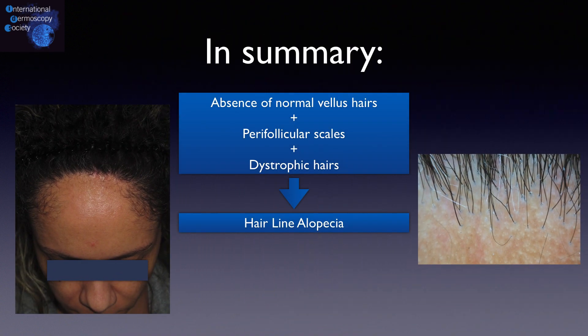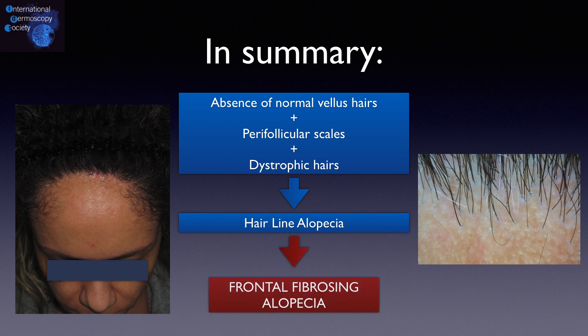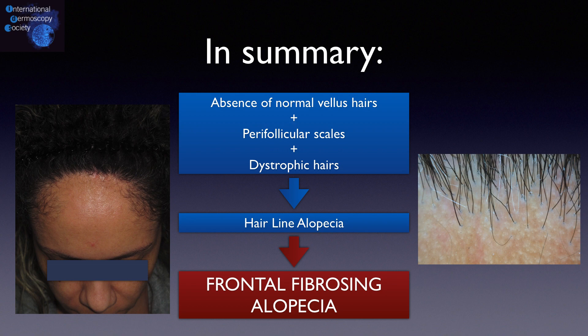In summary, the absence of normal vellus hairs, perifollicular scales, and dystrophic hairs in the frontal hairline is suggestive of frontal fibrosing alopecia.